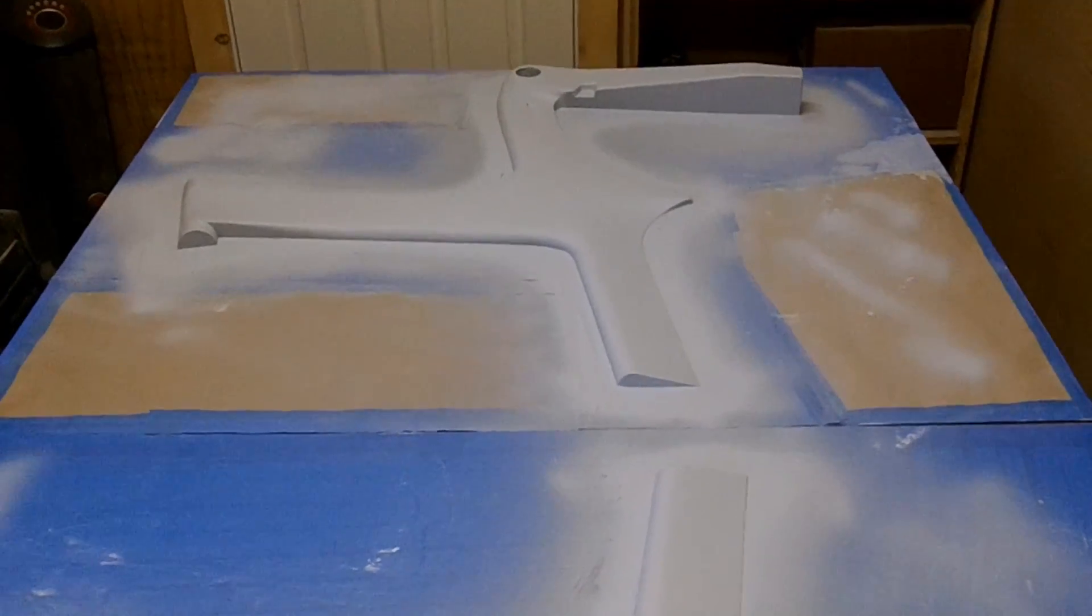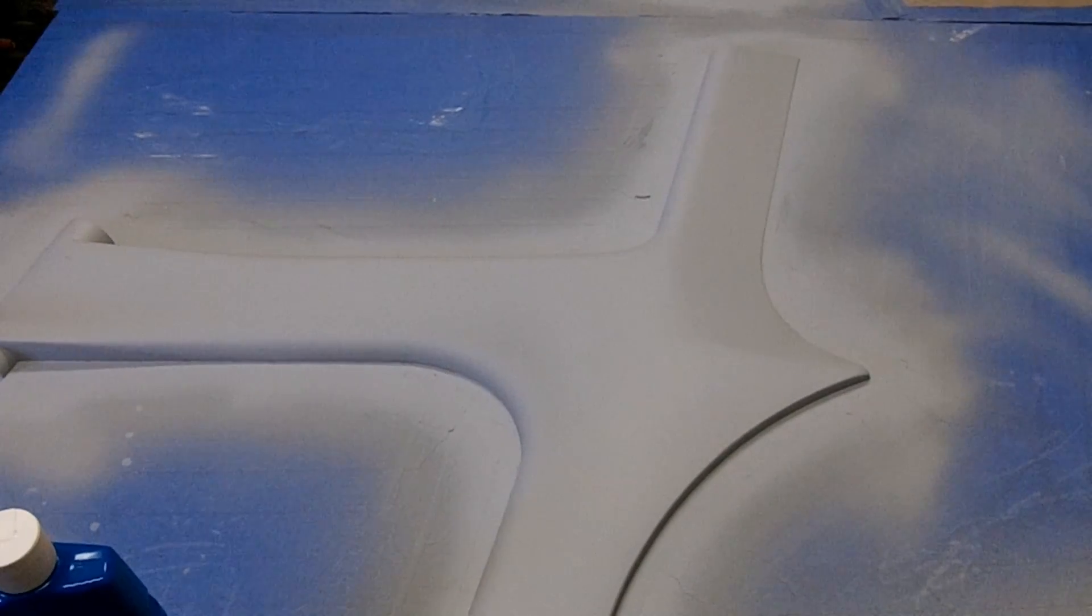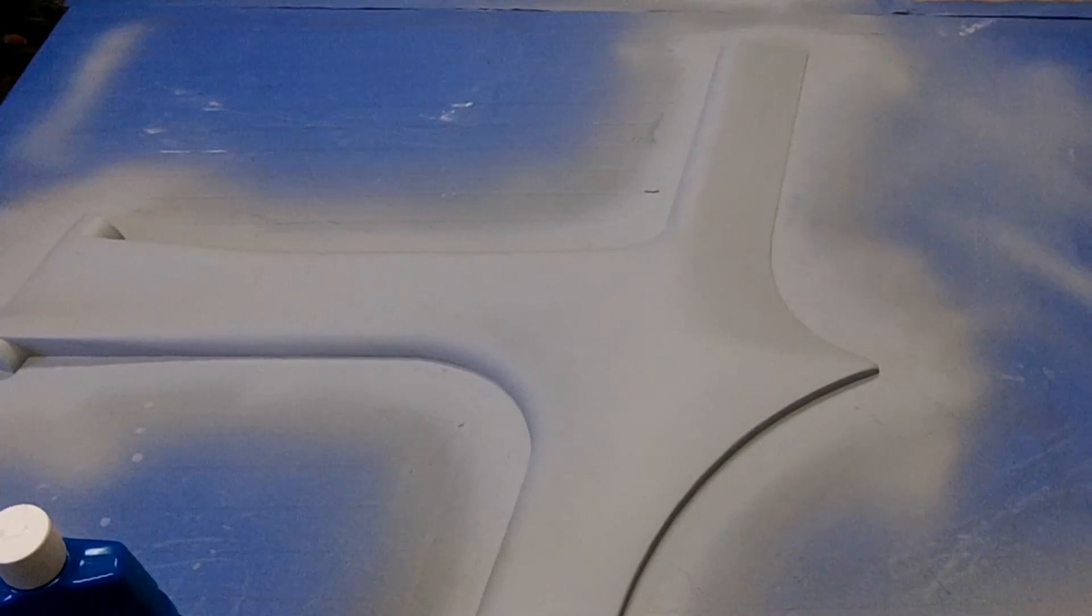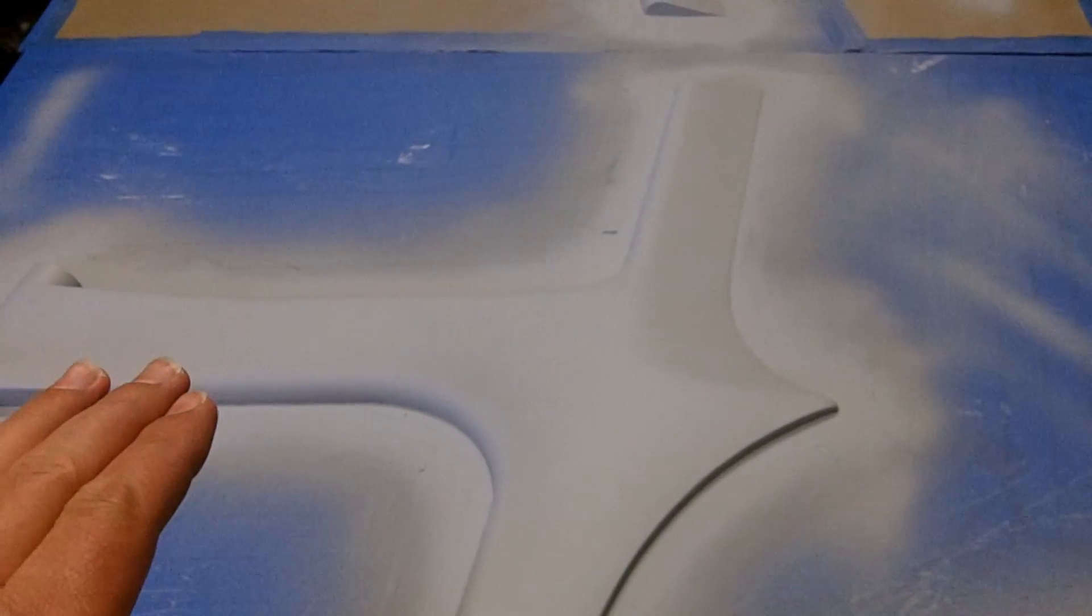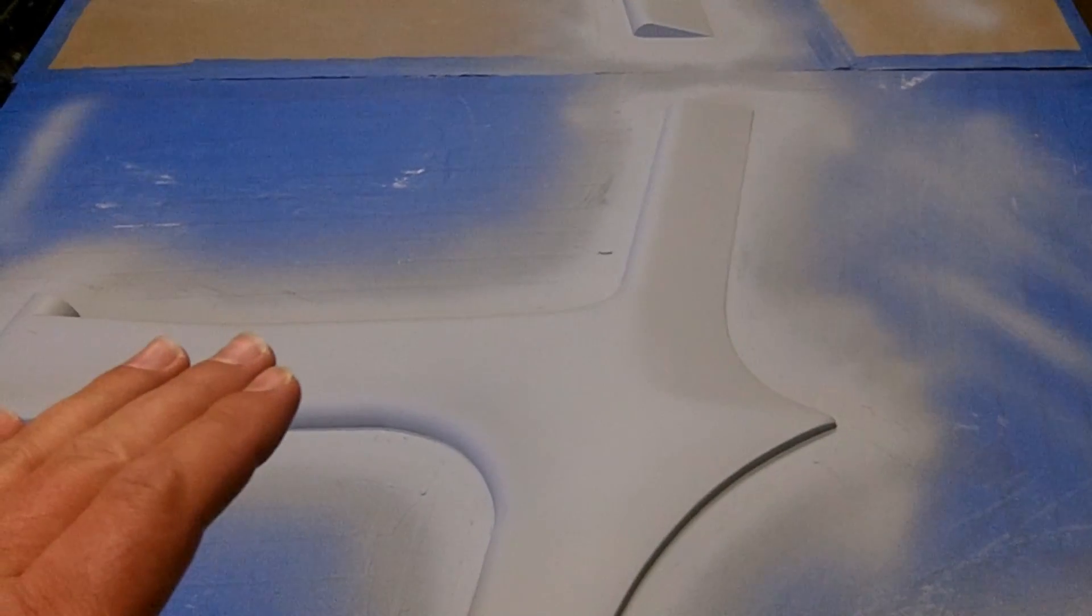Alright. So I went ahead and took care of those pinholes like I was telling you and resprayed this with Duratec. And it's looking a lot better now. I'm satisfied with it. So now what I'll do is I'll take some 320 grit sandpaper and level everything off. And once I've just leveled it, I'll move up to 400 and then give it a little bit more of a sand. Then move up to 600 grit sandpaper. I will take off the tape, smooth out the edges, so it has a nice transition to that melamine.